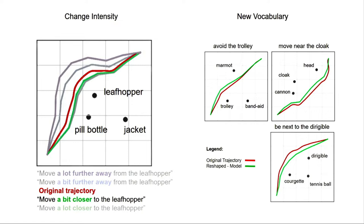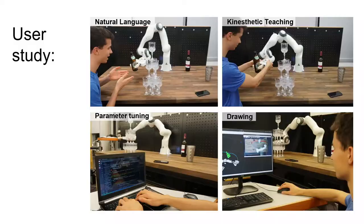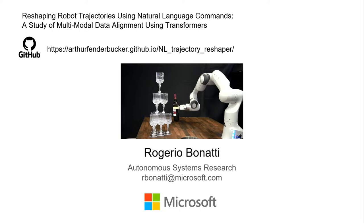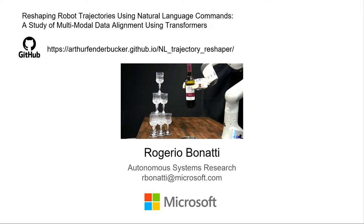We conducted a user study comparing our interface with kinesthetic teaching, directly programming the computer, and drawing on a screen. Results show users can interact much faster with the language interface, and it produces initially more feasible trajectories. With other interfaces, trajectories are often not dynamically feasible by the robot, requiring multiple interactions. The code is available on GitHub.